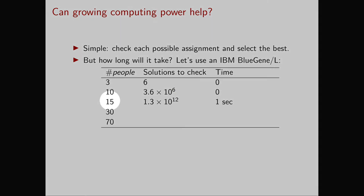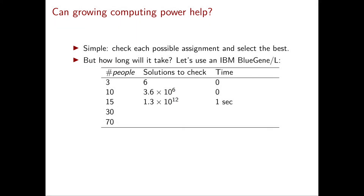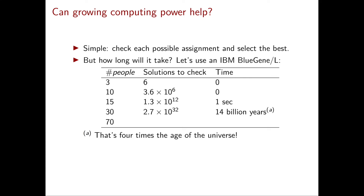Let's try with 15 people and 15 jobs. In this case, we have around 10 to the 12 solutions to check, and our supercomputer takes one second. Now let's try with 30 people and 30 jobs. The number of solutions to check is 30 factorial, which is roughly 10 to the 32. How long will the IBM Blue Gene L take? Actually, it's going to take 14 billion years — four times the age of the universe. So you're definitely not going to see the output of your algorithm. Just doubling the number of people from 15 to 30 makes the problem go from trivial to completely unsolvable with this algorithm.